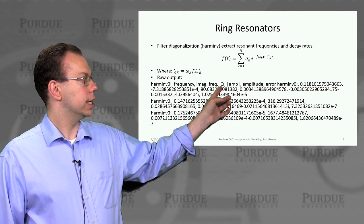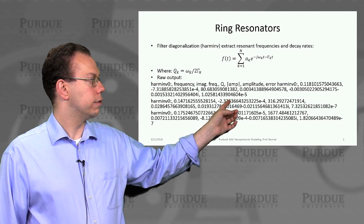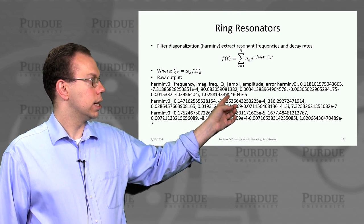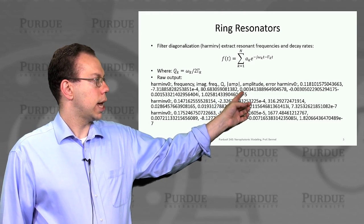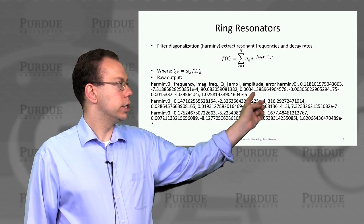So in this particular case, we were running this for the small default example. You can see it actually gives us a quality factor at a frequency of 0.12 of about 80.